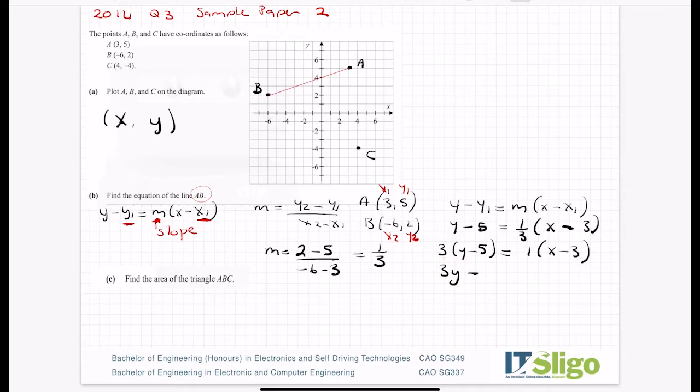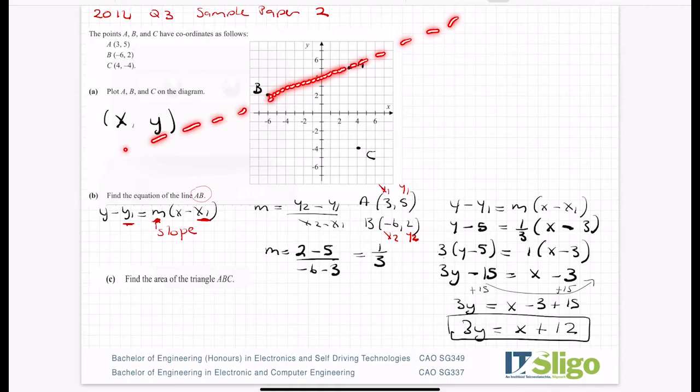So the three came up here, so it's three by everything on that side and then the top number by this side. So three by y is 3y, three by five is 15, the bracket closes so I'm done with multiplying by three, equals one times x is x, one times minus three is minus three. Merge the numbers or plus 15 to both sides, whichever way you do it. So you're getting then 3y = x - 3 + 15. 3y = x + 12. And that is the equation of the line AB.